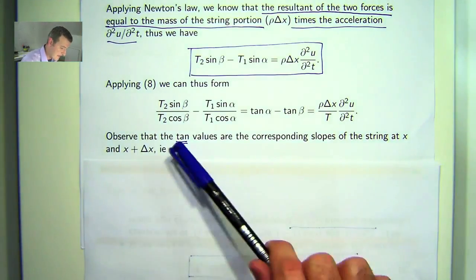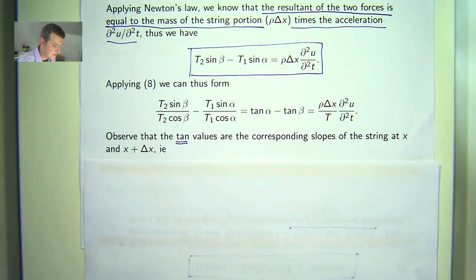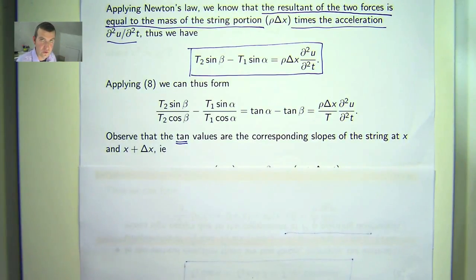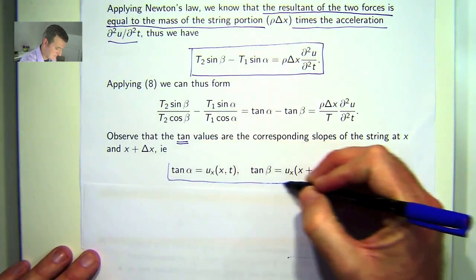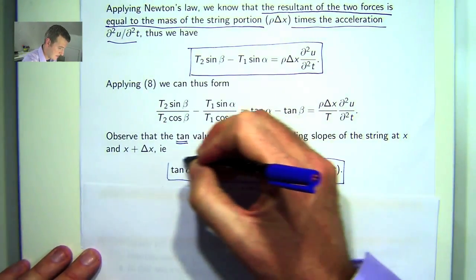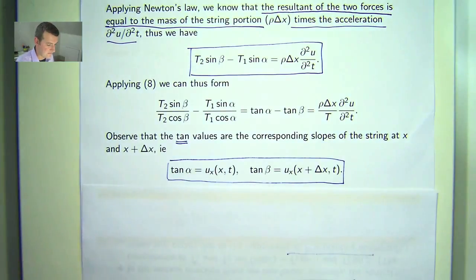In this simple model, the tan values are the corresponding slopes of the string at the endpoints of our small little portion. Therefore, we have tan alpha equals u_x(x, t) and tan beta equals u_x(x + delta x, t).